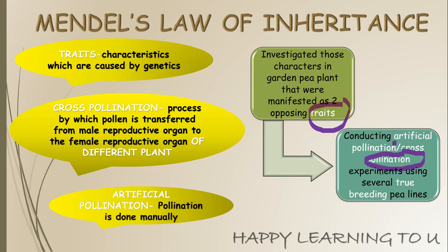The next definition is what is artificial pollination. As you know, pollination is a natural process, but when for the purpose of an experiment we do this transfer manually, it becomes artificial pollination.